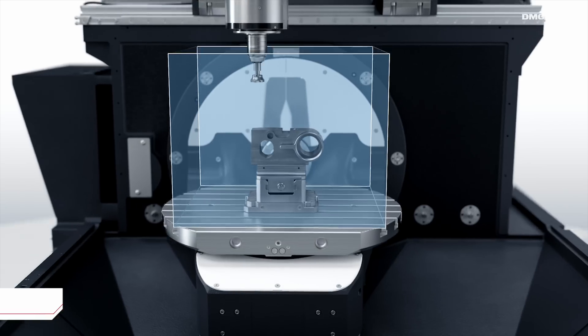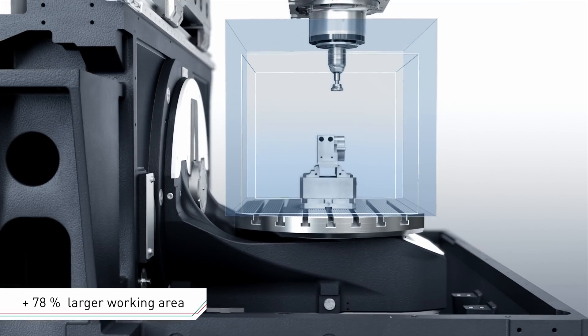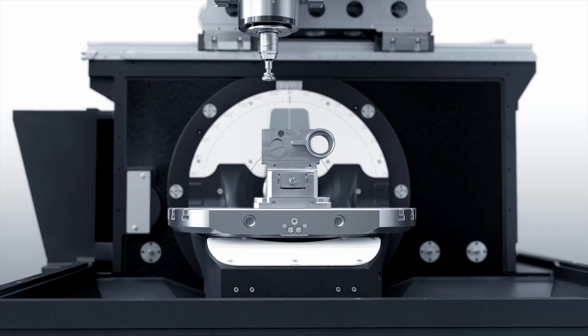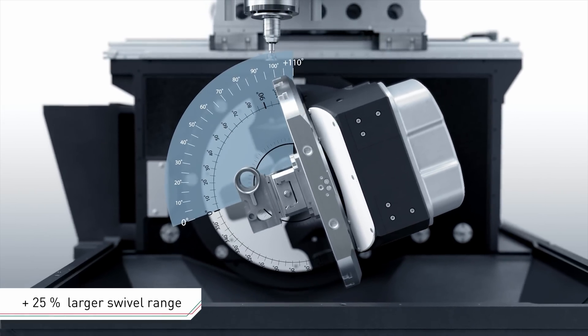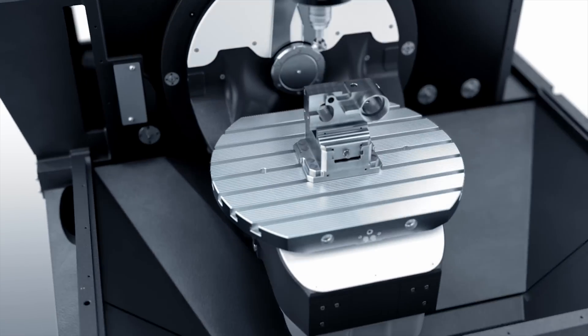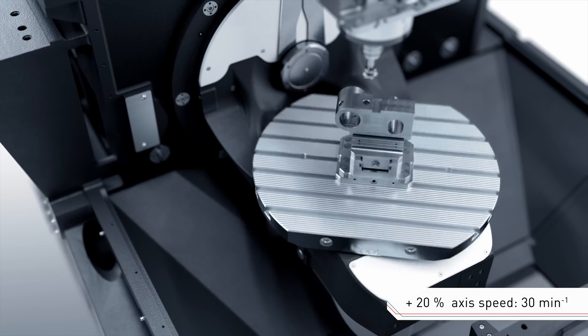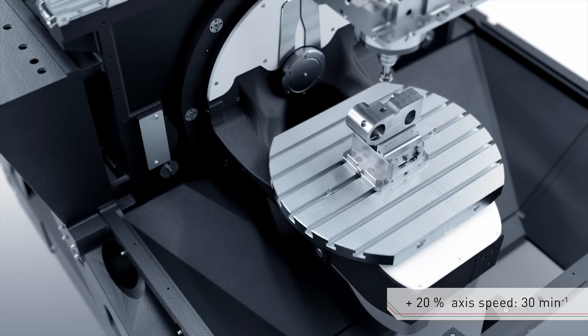The working area was extended by 78%. With the improved swiveling range of plus 110 degrees to minus 35 degrees in the B-Axis, and 20% more access speed, which is now 30 RPM, the productivity of this machine is unmatched in its segment.